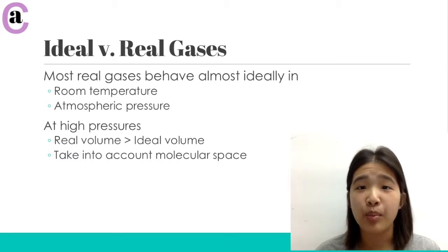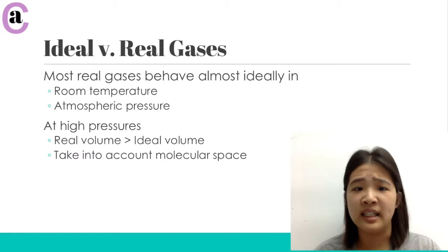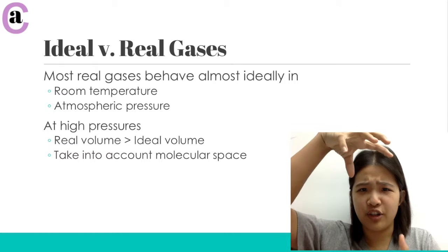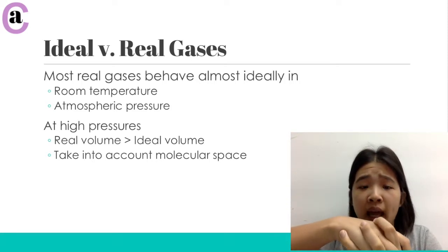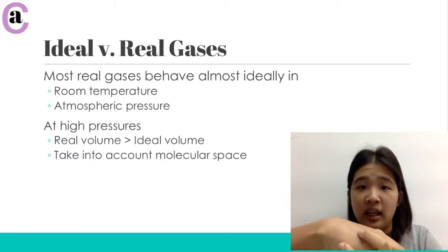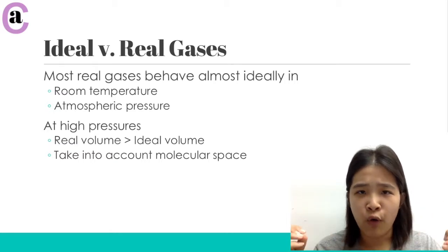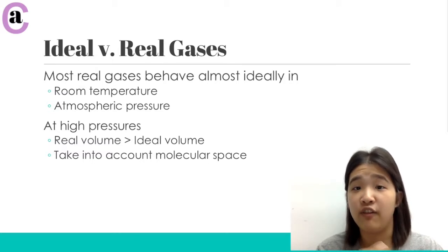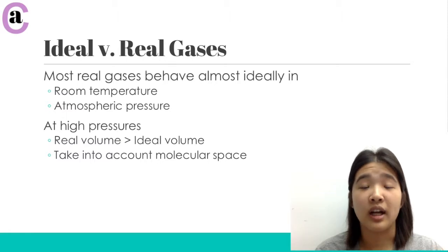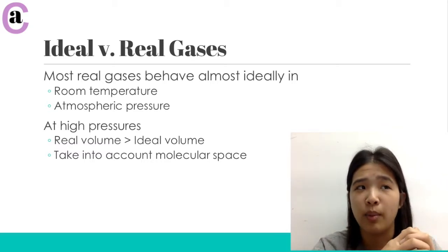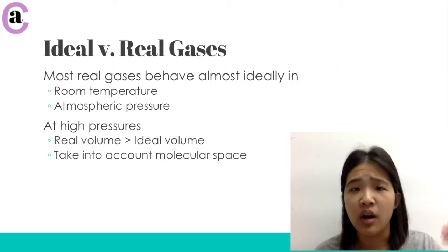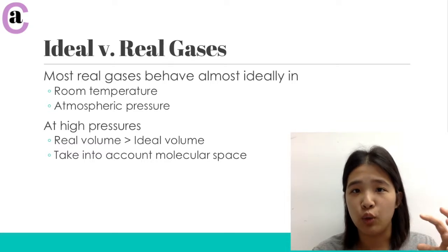So how they differ: number one, at high pressures. When you have really high pressures, basically your real volume is going to be higher than your ideal volume. The reason for that is because at high pressures, you have all of your molecules condensed and compressed into a really small volume. Your ideal gas has no volume for each of its molecules, so none of the molecules have any volume to contribute to the volume of the gas as a whole. But when you're talking about a real gas that does have real volume, the proportion that the molecules take up in that container becomes higher and higher at higher and higher pressures. So then you really can't just ignore the volume that each of the molecules contributes to the whole.